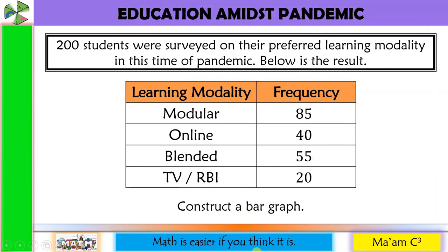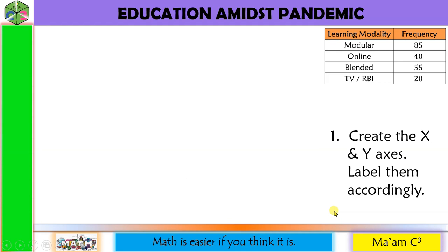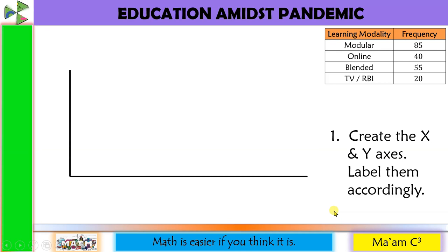Let's have the example — Education amidst pandemic. 200 students were surveyed on their preferred learning modality in this time of pandemic. Here are the different learning modalities and their corresponding frequencies. Now, let us construct a bar graph. Here is our data. Step one, create the X and Y axis. We have the X axis and Y axis. Label them accordingly. I decide that the learning modality will be on the X axis and the frequency on the Y axis.